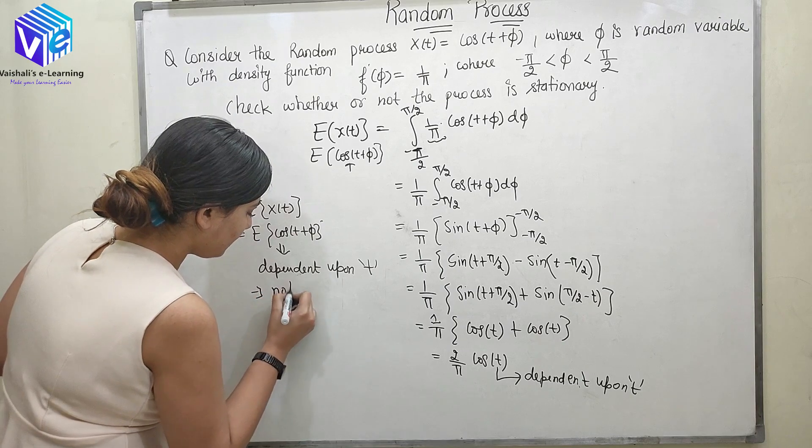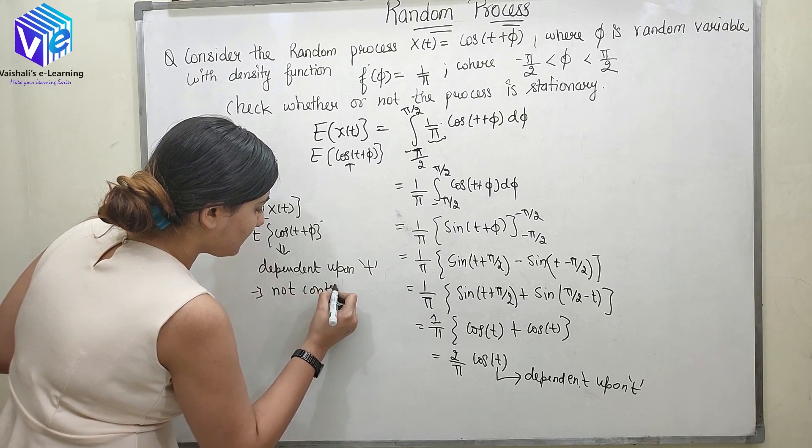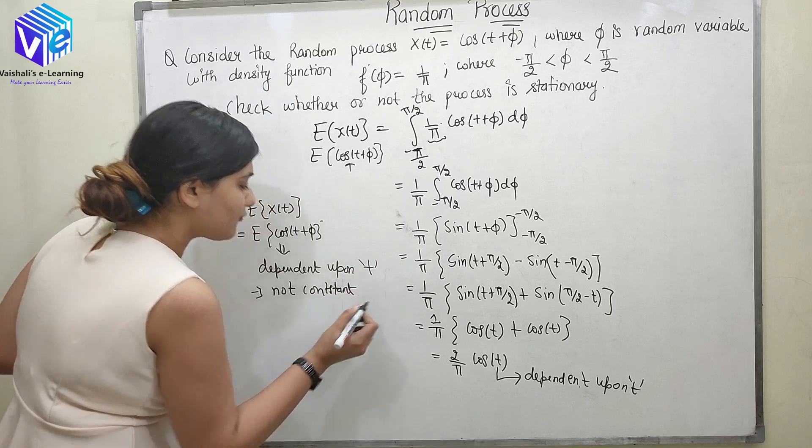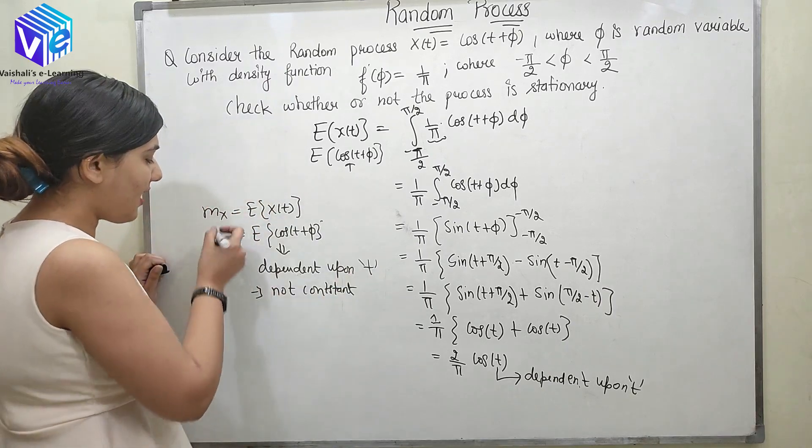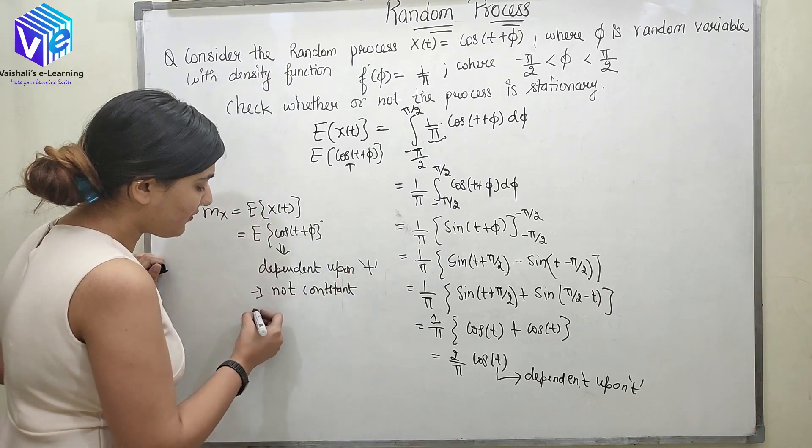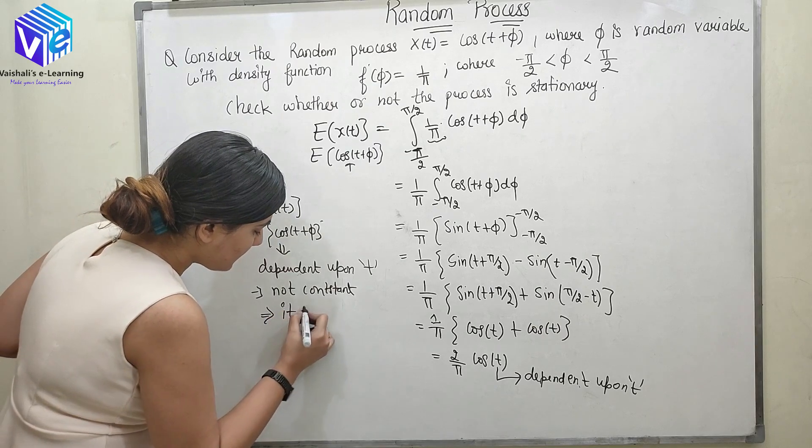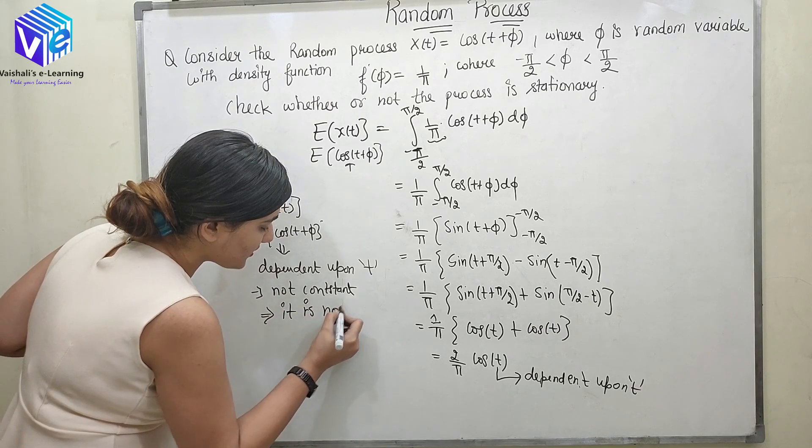It is not constant. So when t varies for different values of t, mx would be different, mean would be different. So now I can say it is not stationary.